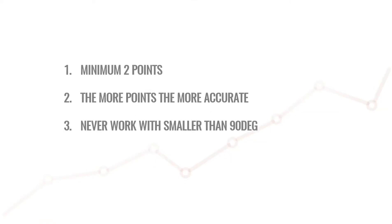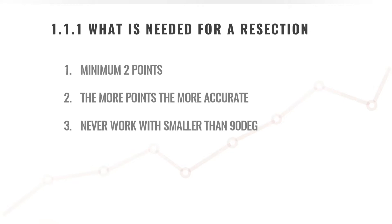What is needed for a resection? First, you need a minimum of two points to calculate the position of your total station. The more points you can add to your resection, the better. We never work with an angle smaller than 90 degrees when using a total station, as this might introduce errors. We also want to avoid working in a straight line. If you only have two points, try to get a better angle before doing your resection — it's all about getting the best possible angles to calculate your position in the most accurate way.